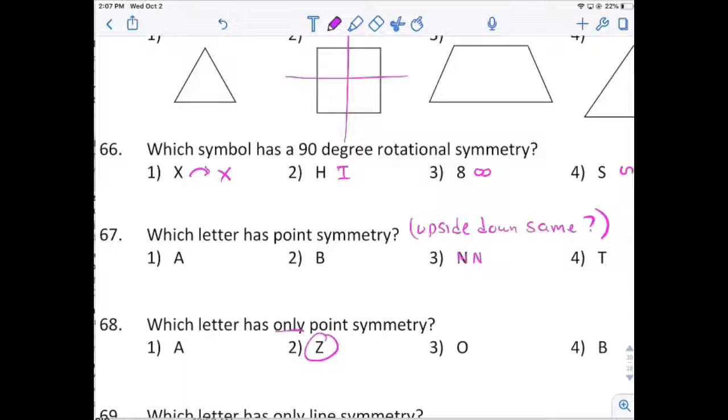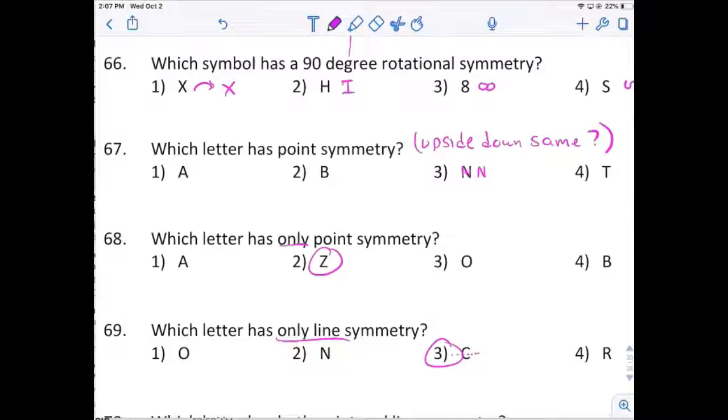A does not. O has it, but it has line also, and B doesn't have it. 69. Which letter has only line symmetry? It would be C. R has neither, N has point, R has both.